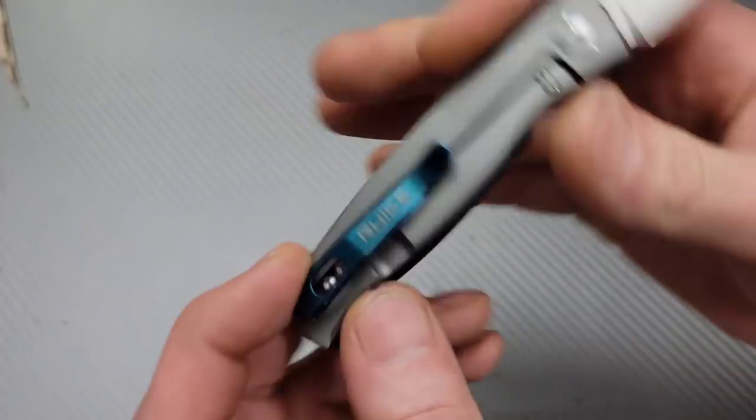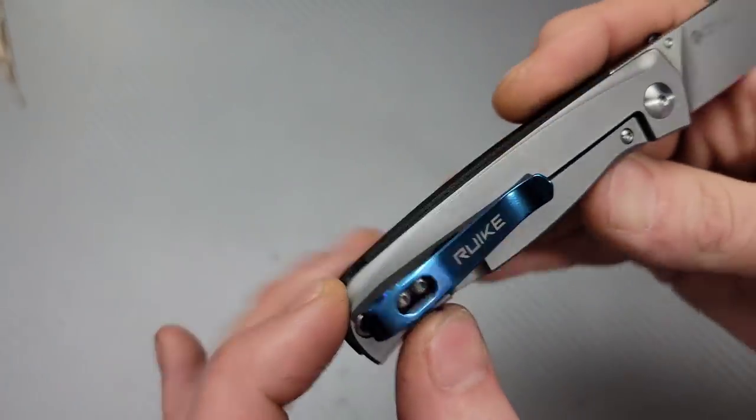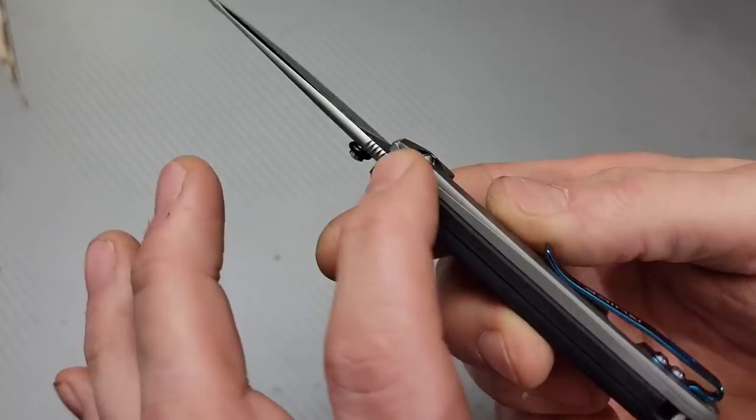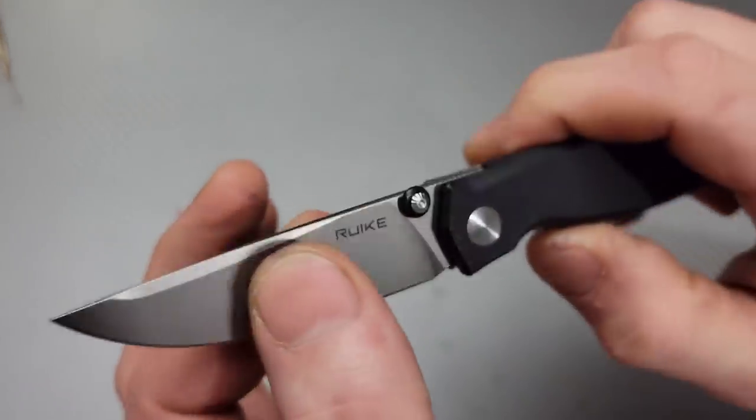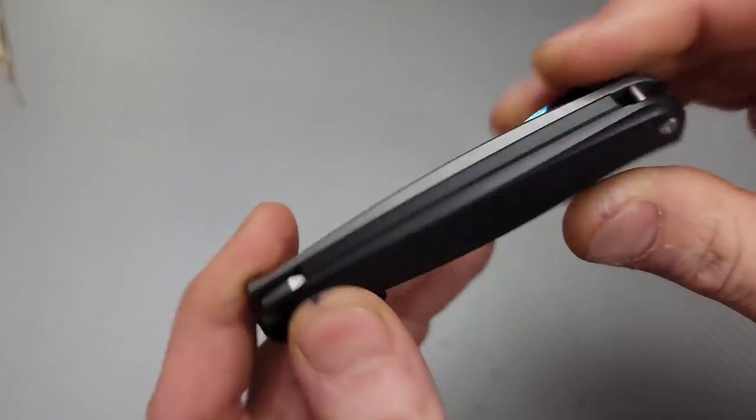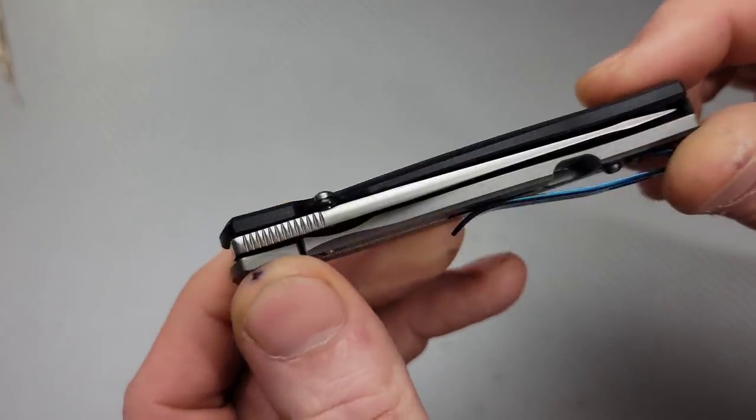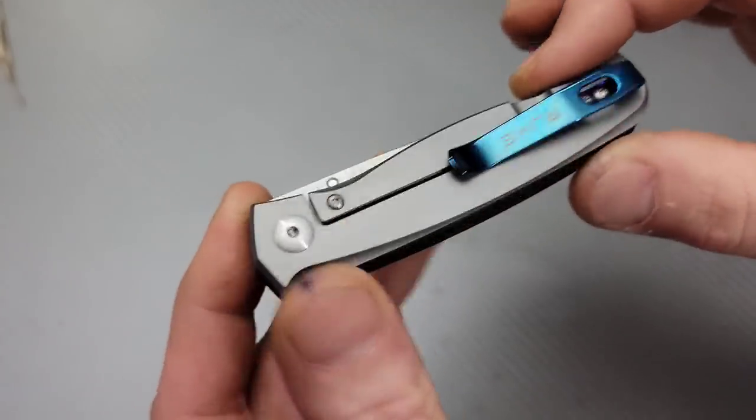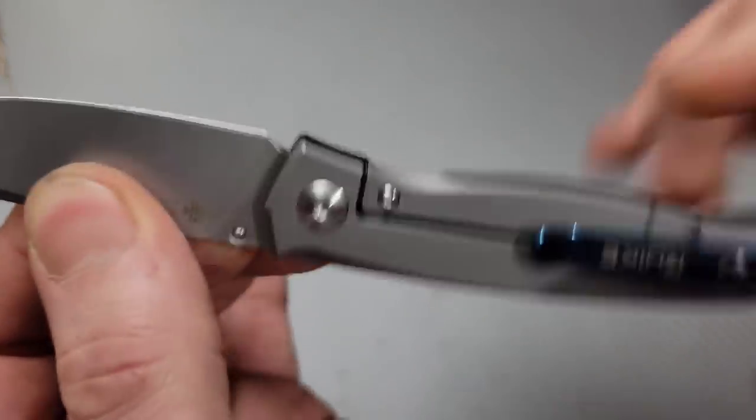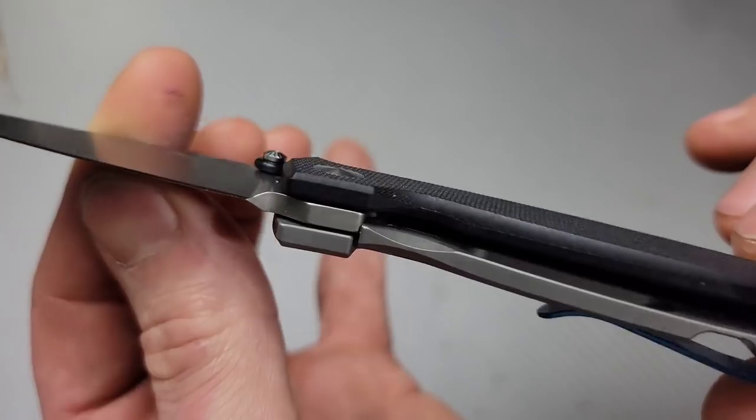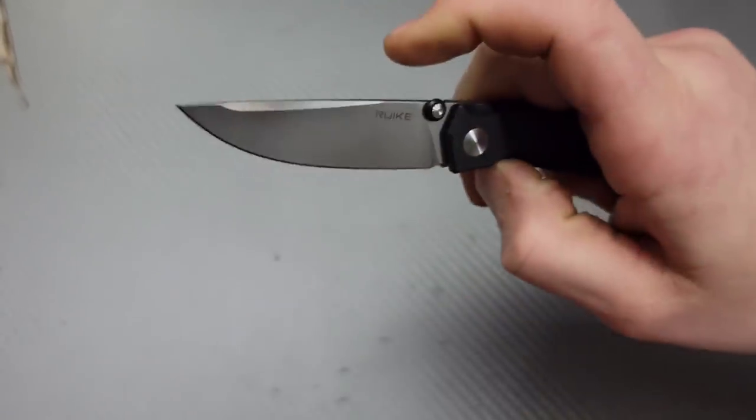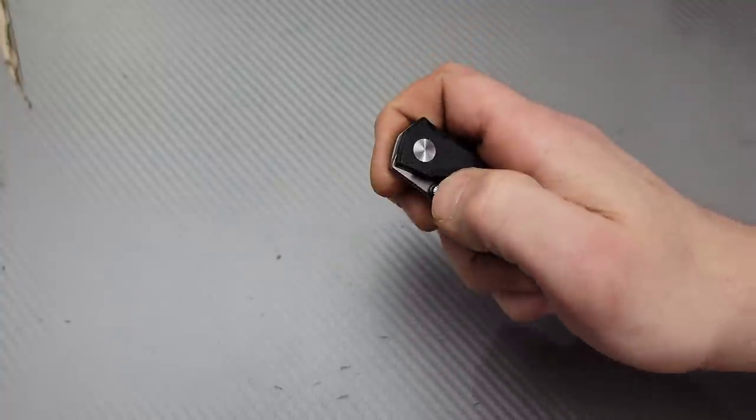G10 on this side and then we have a steel pocket clip and a G10 backspacer. It's actually a full backspacer because the blade would be very close right here since most of the blade hides inside the handle. We have a steel lock bar insert on the titanium frame. It is locked up very solid and on bearings, very smooth.